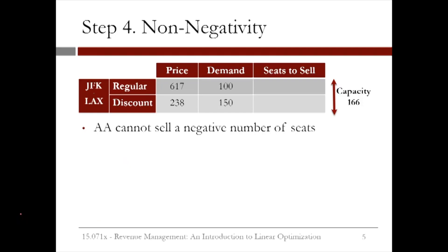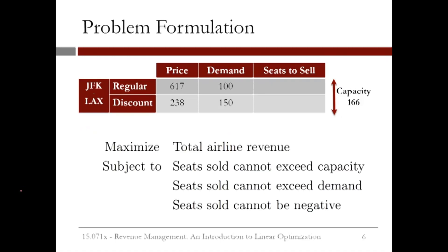The final step is to make sure our variables are taking reasonable values. In this case, it wouldn't make sense to sell a negative number of seats, so we need to make sure that both R and D are greater than or equal to 0. Our entire problem is to maximize total airline revenue, subject to the constraints that seats sold can't exceed capacity, seats sold can't exceed demand, and the seats sold can't be negative.